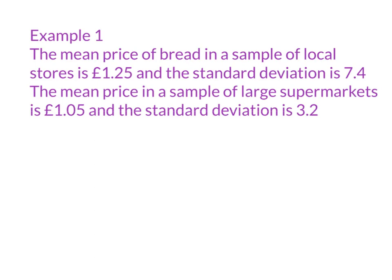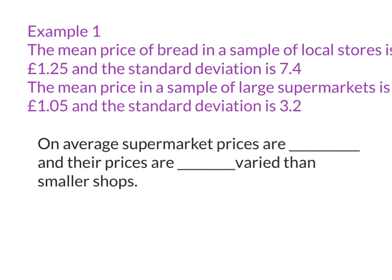Statement one should always be about the mean. So statement one, we're going to look at the two mean prices. Out of preference and just habit, I always start talking about the second one, so I'm going to start talking about the supermarkets. You might want to do it the other way, but your answer would then be the complete opposite of what I'm going to write in the next slide. First, always start with 'on average.' 'On average' is a substitution for talking about the word mean. If you put the word mean in there in the exam, you won't get that mark. So start your first sentence with 'on average, supermarket prices are...'